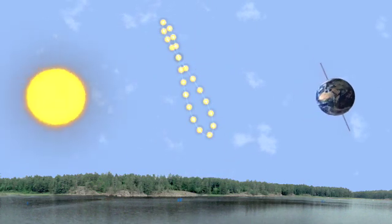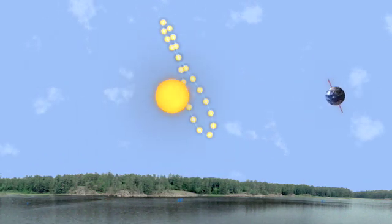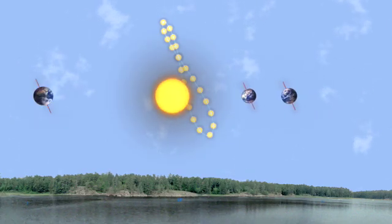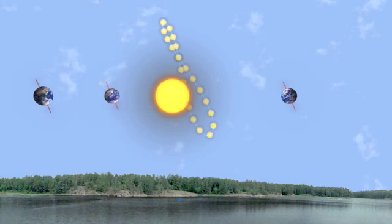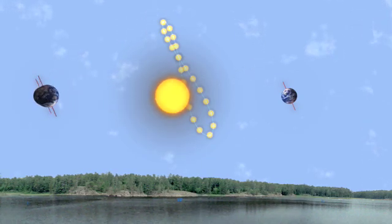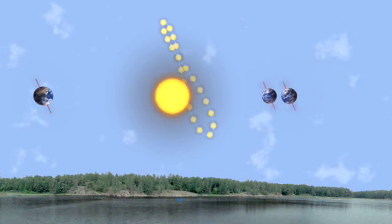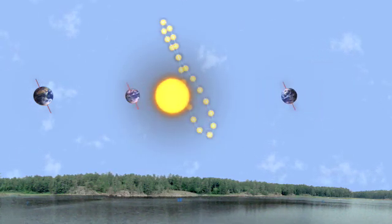On the days in its orbit when the Earth is at a maximum tilt towards or away from the Sun, the length of the daylight is at a maximum or a minimum. These days are called solstices. And the Sun will be at the top left or bottom right of the analemma.